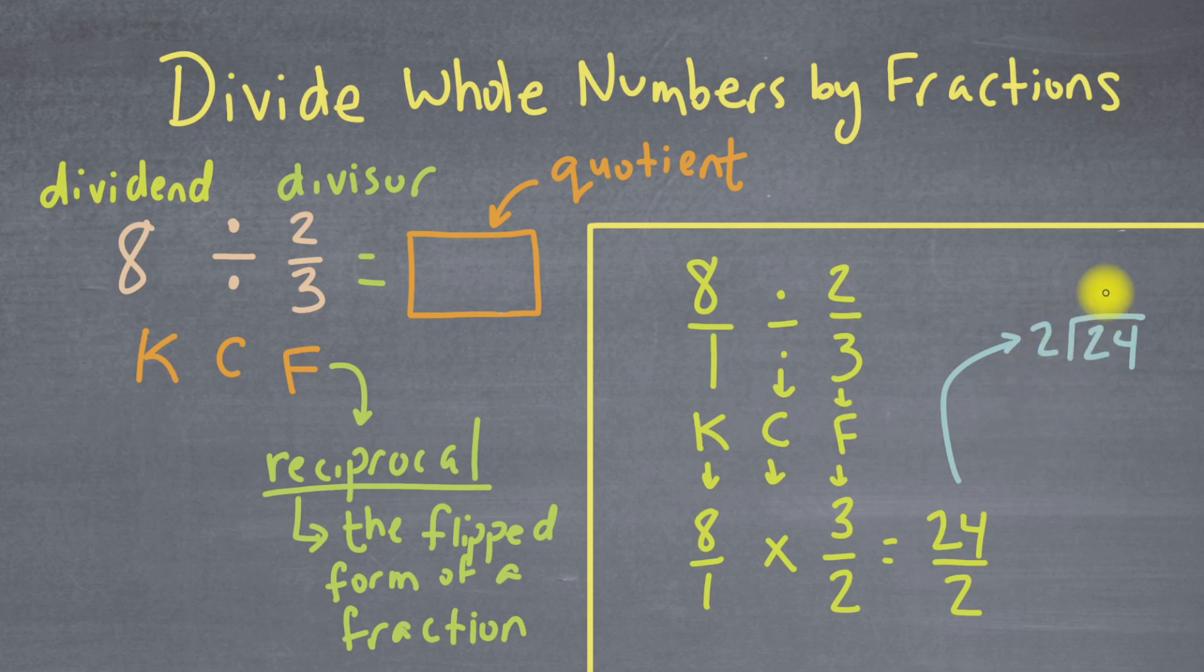So here we'll have 24 divided by 2. 2 goes into 24 twelve times, and that's going to be 4. I'll subtract and I get 0. So the answer is 12. So 8 divided by 2/3 equals 12.